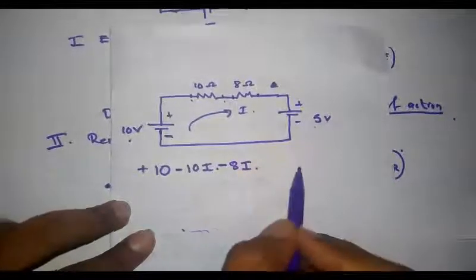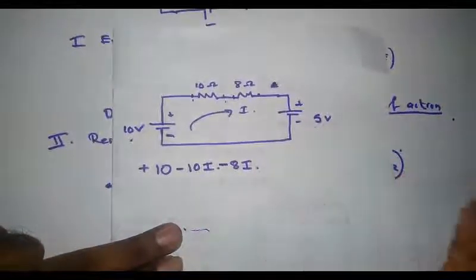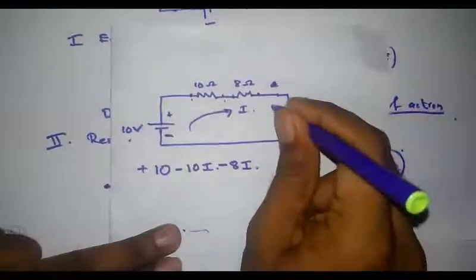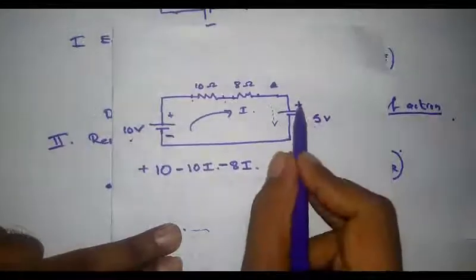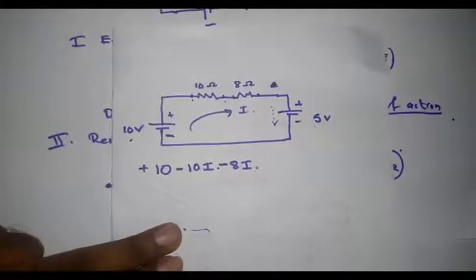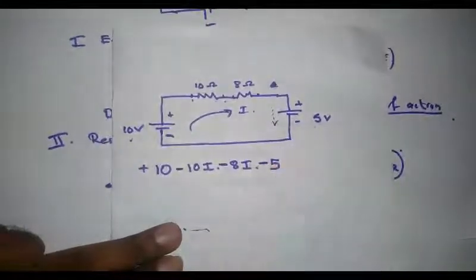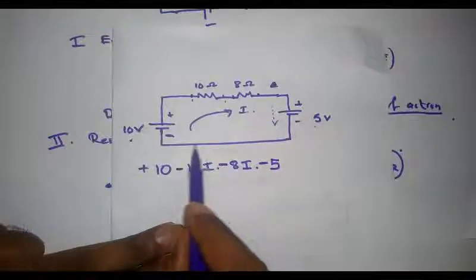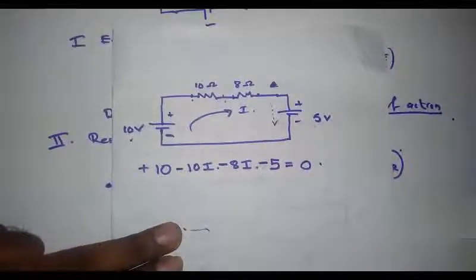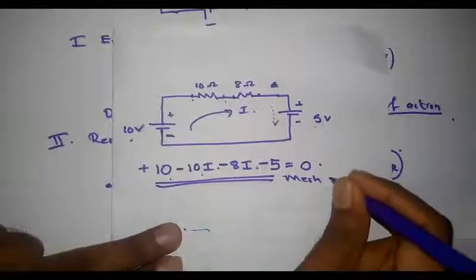Continuing around the circuit, I encounter the 8 ohm resistor. Again, direction of action and current flow are the same, so I assign a negative sign: minus 8I. Then I encounter the 5 V battery. For an EMF source, I consider only the direction of action. Moving from positive to negative terminal means a fall in potential, so I assign a negative sign: minus 5. No other elements remain, completing the mesh equation: 10 minus 10I minus 8I minus 5 = 0.